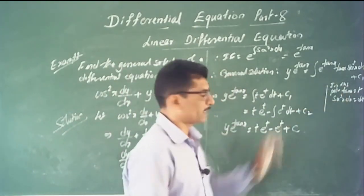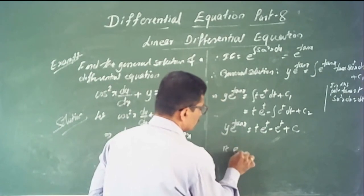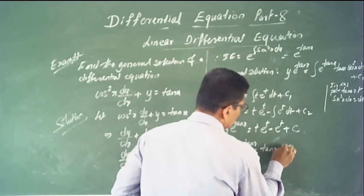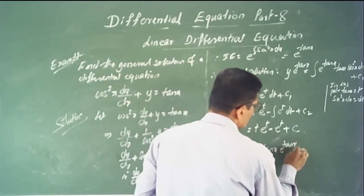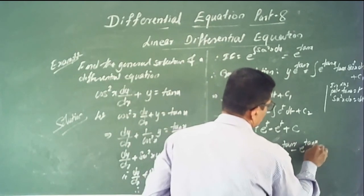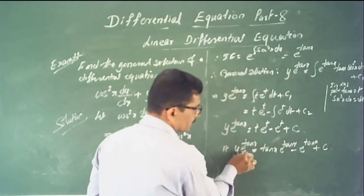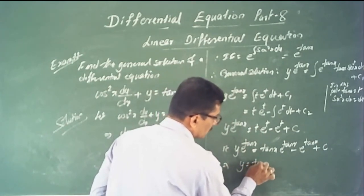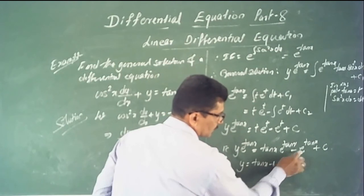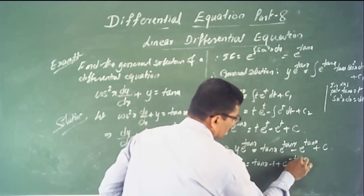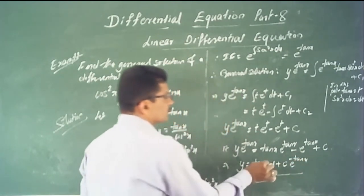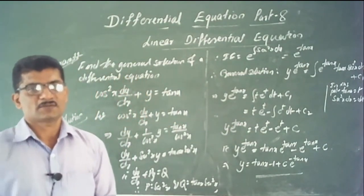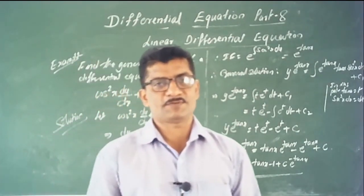Dividing by e^(tan x): y = tan x − 1 + C · e^(−tan x). This is the general solution of the given differential equation. We will solve some other problems in the next video. Thank you.